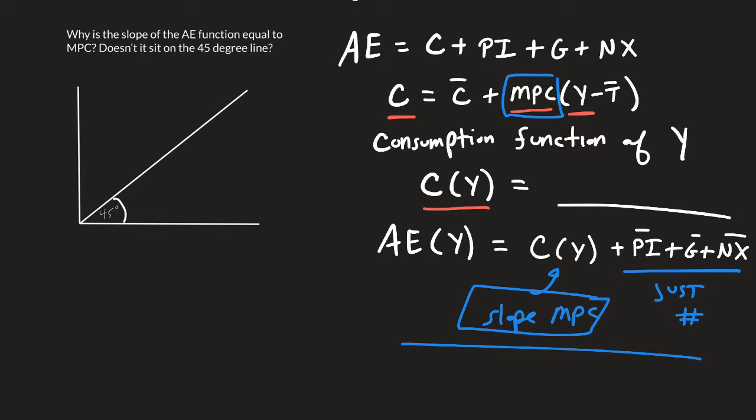We see the aggregate expenditure function looks something like this with the slope of MPC. Now, a lot of people get confused because they think Y equals aggregate expenditure, but this is only at a single point.